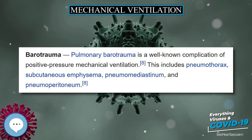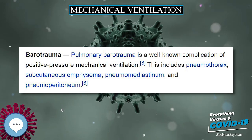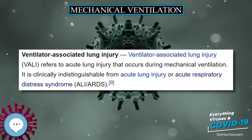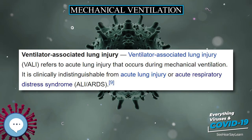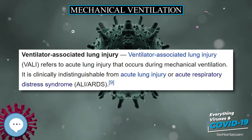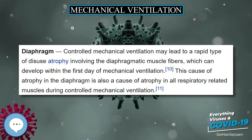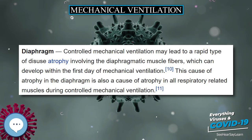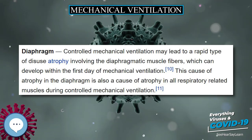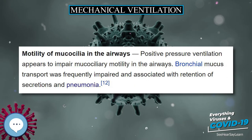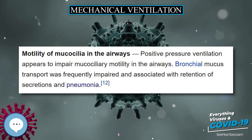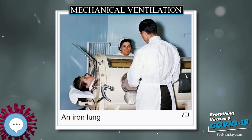Positive pressure ventilators work by increasing the patient's airway pressure through an endotracheal or tracheostomy tube. The positive pressure allows air to flow into the airway until the ventilator breath is terminated. Then, the airway pressure drops to zero, and the elastic recoil of the chest wall and lungs push the tidal volume — the breath — out through passive exhalation.